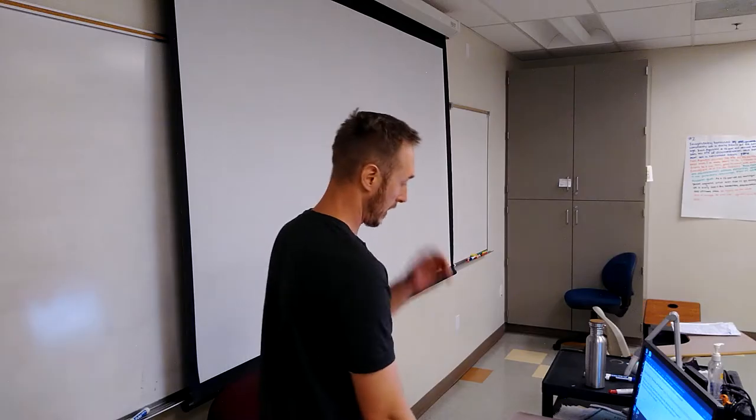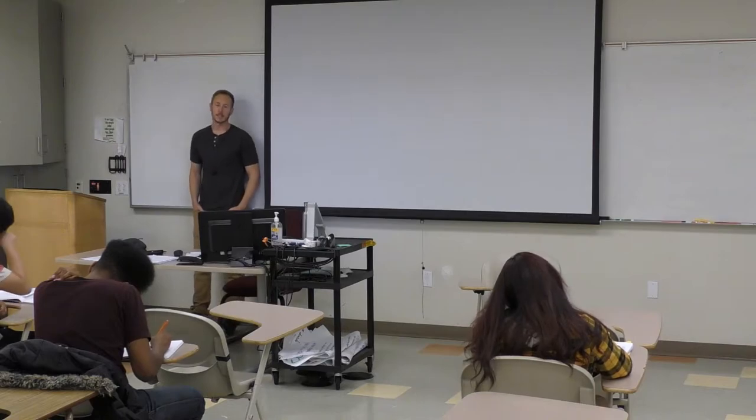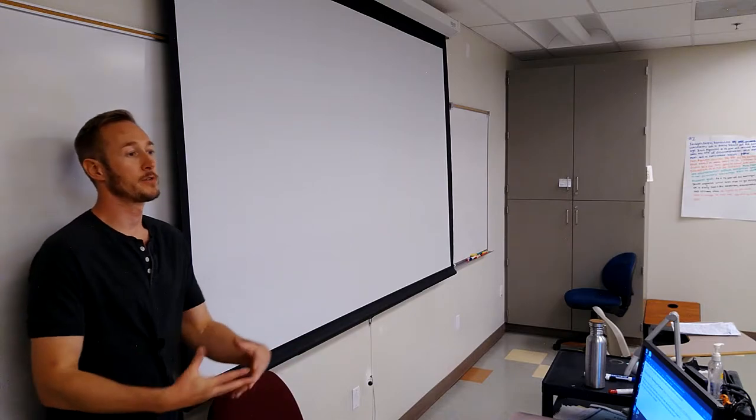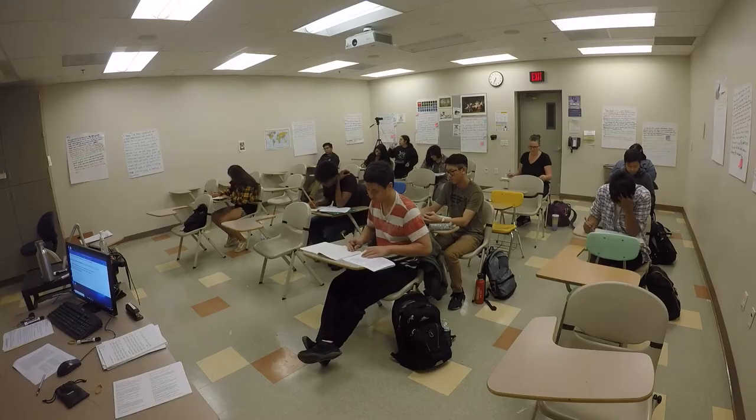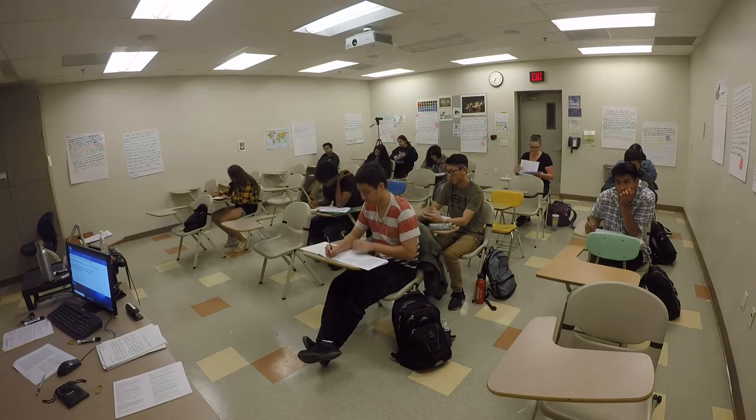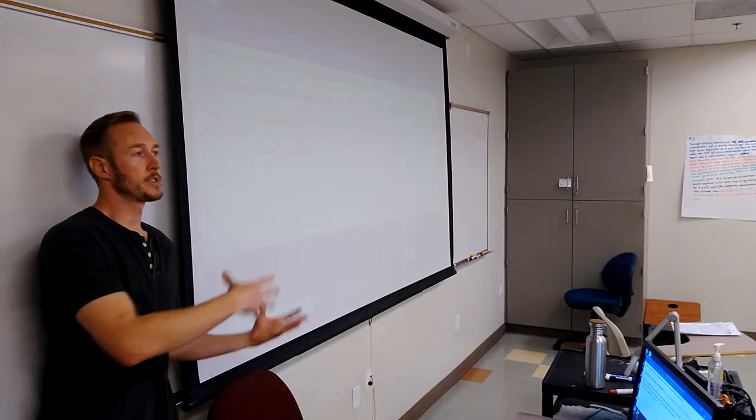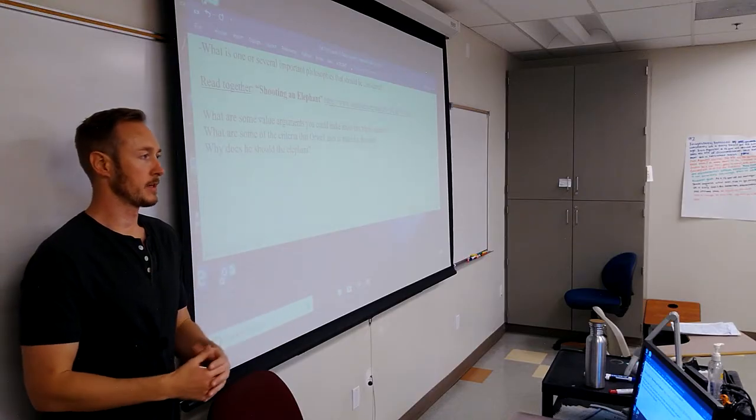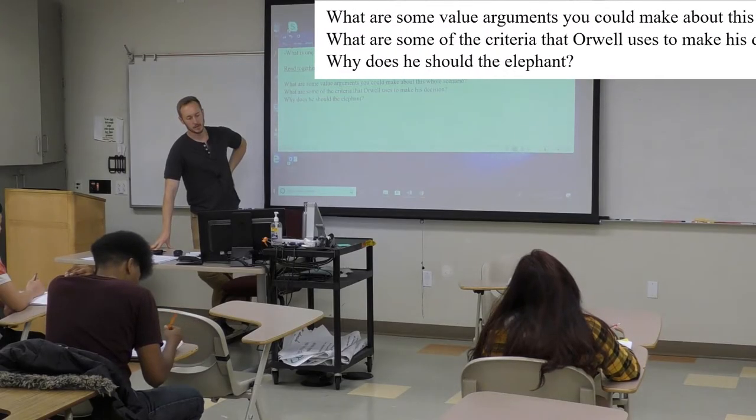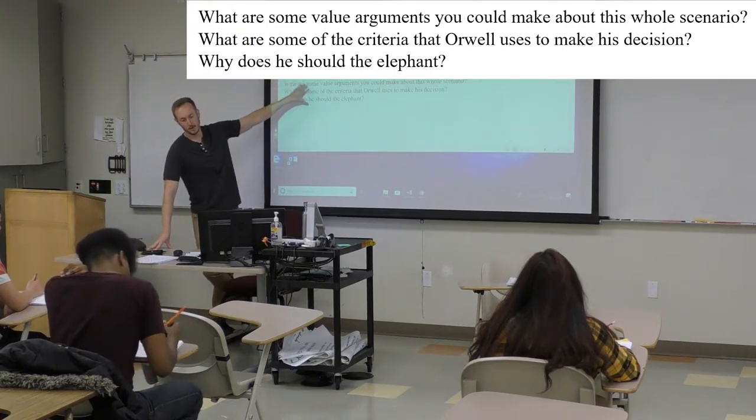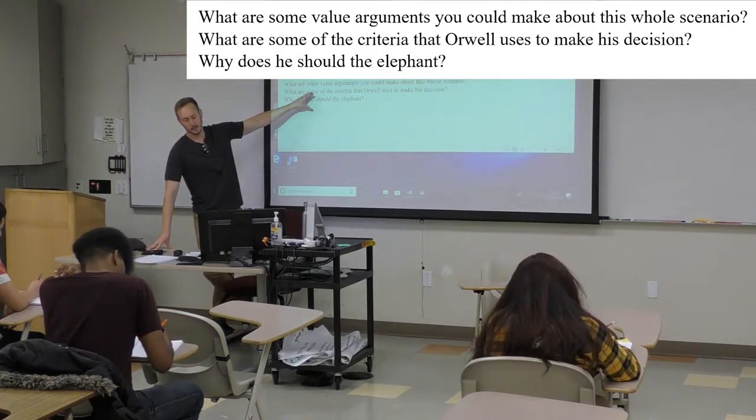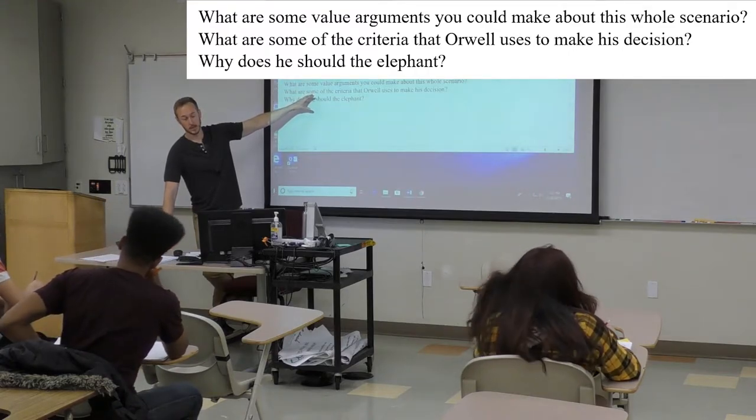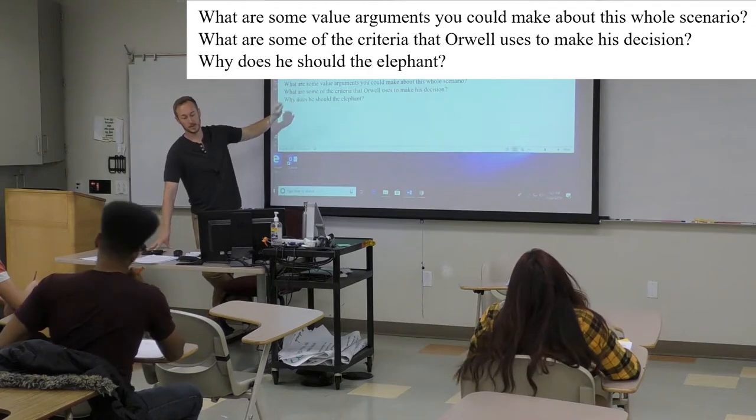So I got a couple of questions. Write your answers a bit. Obviously the first thing you're always going to do in any scenario is you go to the text. You go to the information, right? You don't just draw blindly from your emotions about it. But then still you use those things to factor out how you feel as well as what a value claim could be about. So what are some value arguments you could make about this whole scenario? What are some of the criteria that Orwell uses to make his decision? And why does he actually shoot the elephant?